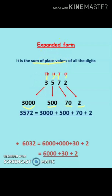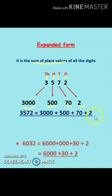When I write the expanded form of three thousand five hundred seventy-two, I will write: three thousand five hundred seventy-two equals three thousand plus five hundred plus seventy plus two. We connect these with addition signs in between, making it the sum of all the place values. Let's take another example: the number is six thousand thirty-two.